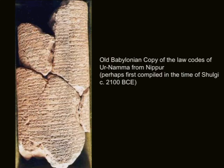We have a number of capital offenses: if a man commits murder, then that man must be killed. If a man commits robbery, he will be killed. If a man deflowers the virgin wife of another, they shall kill him. However, if the wife of that man followed another man and slept with him, they shall kill her and that man shall be set free. If a man deflowers the virgin slave of another, he should pay that man five shekels in silver. Our laws are concerned with capital offenses, but we're already seeing a very different set of statuses — not just in terms of gender, but also in terms of slaves.